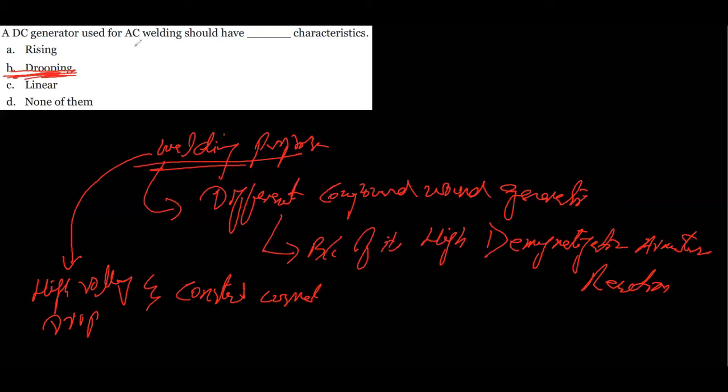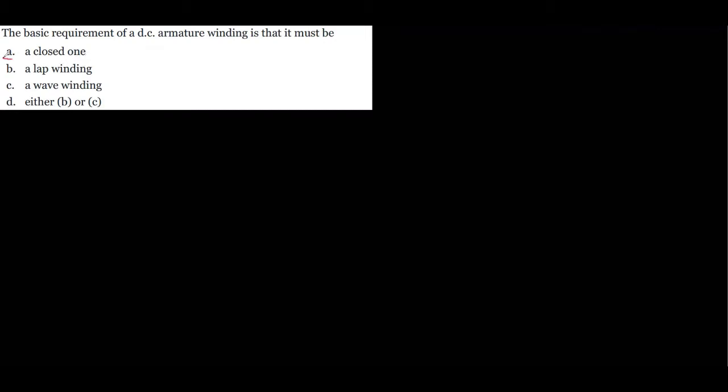The next MCQ is: the basic requirement of a DC armature winding is that it must have a closed winding, a lap winding, a wave winding, or either B or C. Option A is the correct answer — a closed winding is the basic requirement of a DC armature winding.